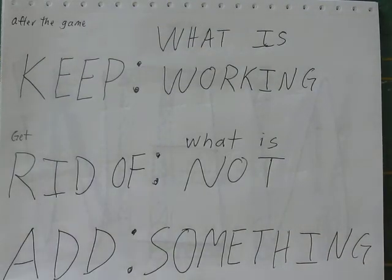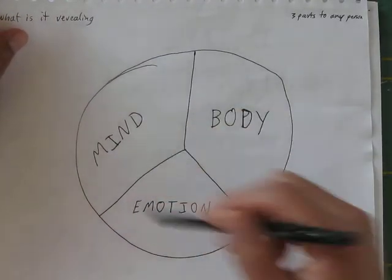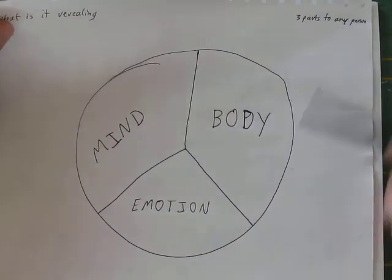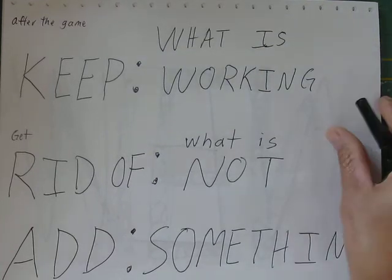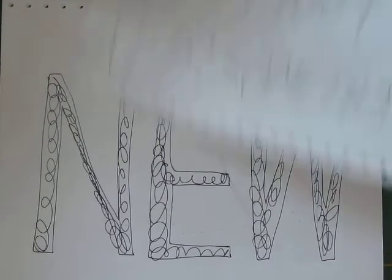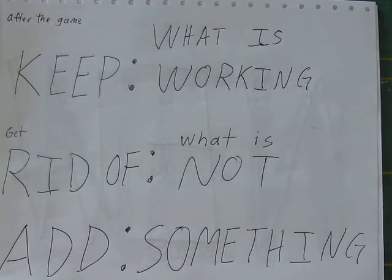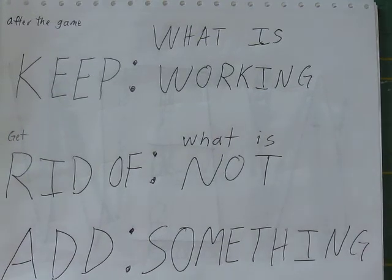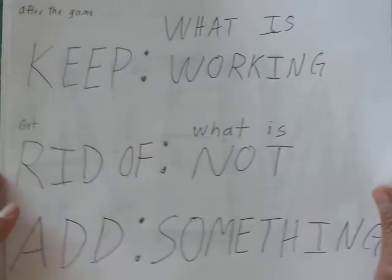Next, what do we do after the game? We look at the game, we look at the three parts of ourselves, and what we want to do is keep what is working, get rid of what is not working, and add something new. This concept comes directly from a very popular individual — Bruce Lee, the martial artist, the actor, also known as Bruce Lee the philosopher. So: keep what is working, get rid of what is not, add something new.